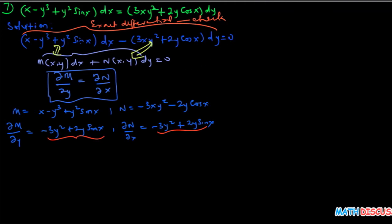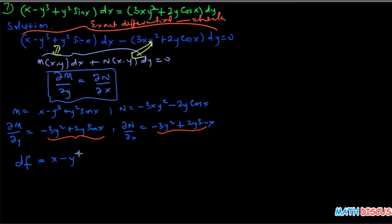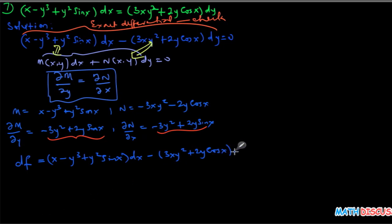These two expressions are equal, so this confirms it is an exact equation. By definition, this means the left-hand side is an exact differential — there exists a function f such that its differential equals (x minus y cubed plus y squared sine x) dx plus (negative 3xy squared plus 2y cosine x) dy.